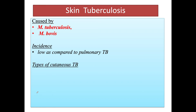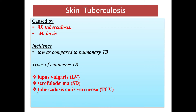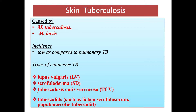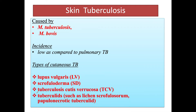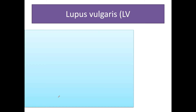The types of cutaneous tuberculosis are: lupus vulgaris, scrofuloderma, tuberculosis cutis varicosa, and tuberculides, which include lichen scrofulosorum and papillonecrotic tuberculide. We will be talking about all these entities in the coming slides. First is lupus vulgaris — it is the most common form of skin tuberculosis.